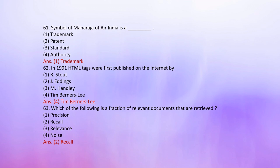Number 62: In 1991, HTML tags were first published on the internet by — 1. R. Stout, 2. J. Eddings, 3. M. Handley, 4. Berners-Lee. The correct answer is Berners-Lee.